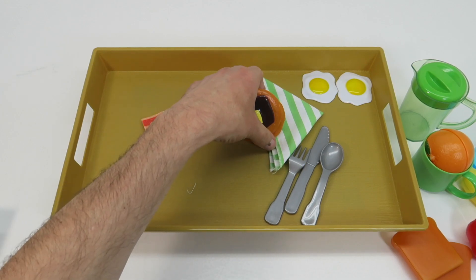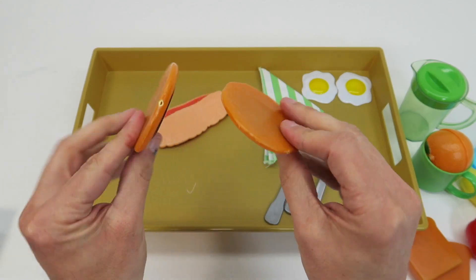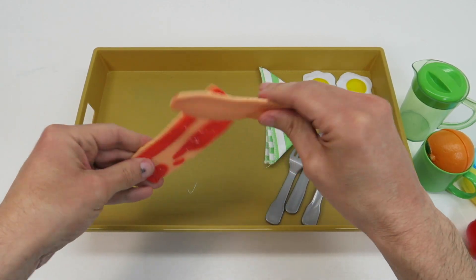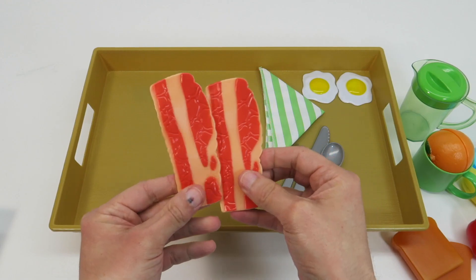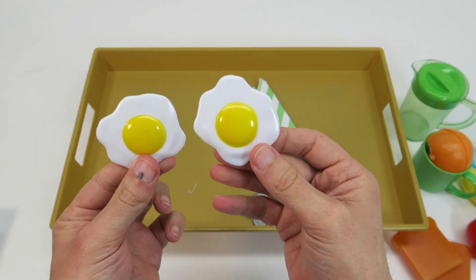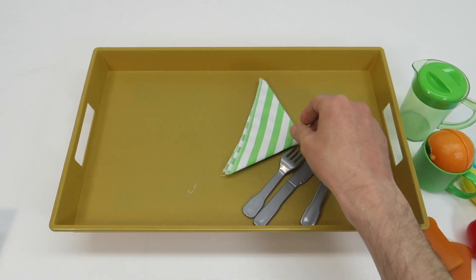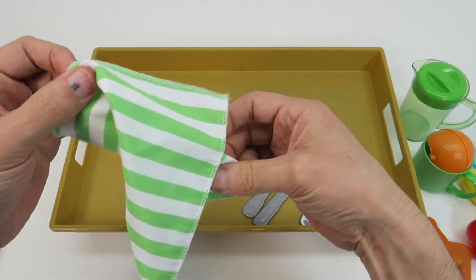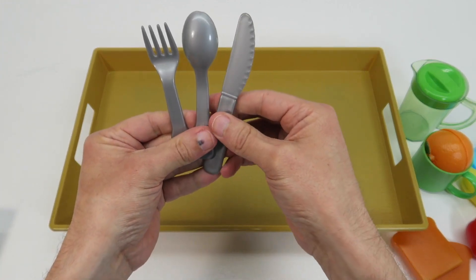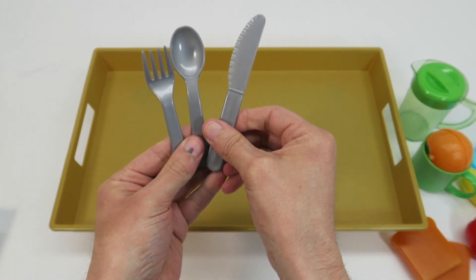And it comes with two pancakes. Comes with bacon. It comes with two eggs, a napkin. It comes with some silverware: a fork, spoon, and a knife.